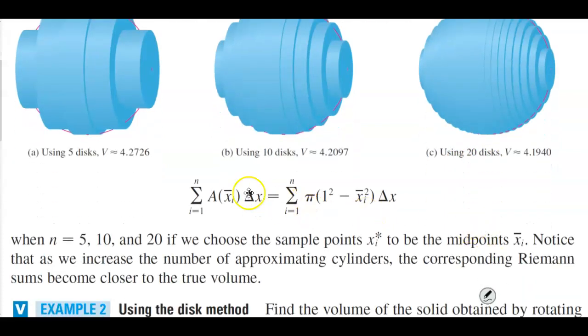So again using the Riemann sum, we're taking the area of a cross section and multiplying it by Δx, which would then give us the following summation.